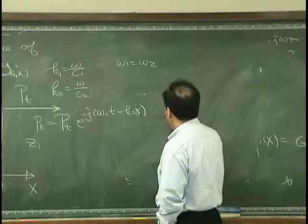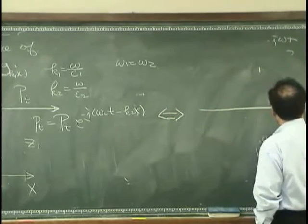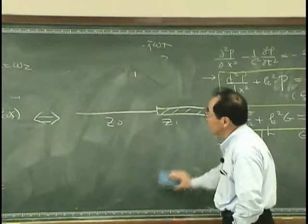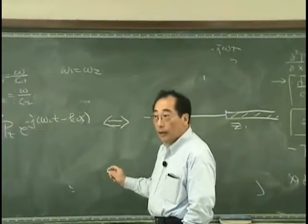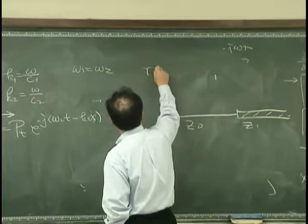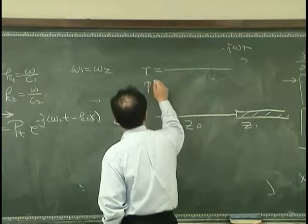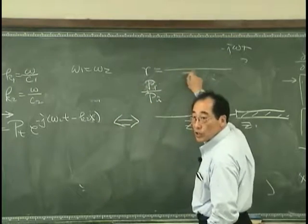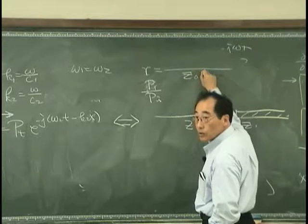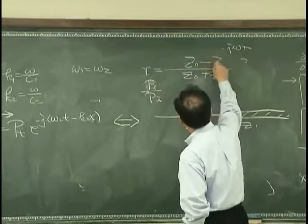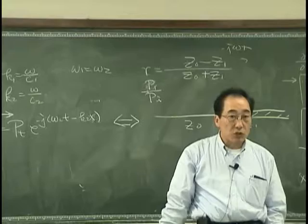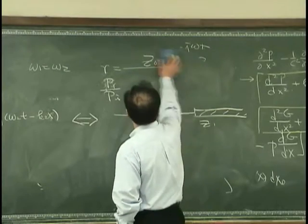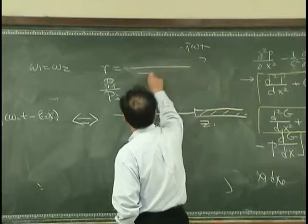But anyway, in analogous with two different strings, we find the reflection coefficient that is the ratio between—what is it? That is z0 plus z1, z0 minus z1. Is it correct, or z1 minus z0? z1 minus z0.